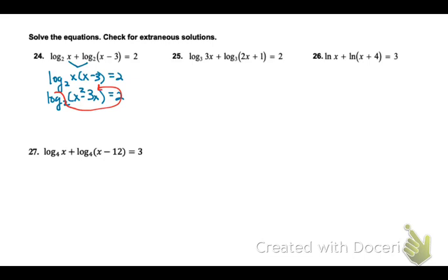Now let's use that log ride motion to switch forms. So we get 2 to the second power, which is 4, equals x squared minus 3x. Now I'm going to subtract my 4, and we've got a quadratic.